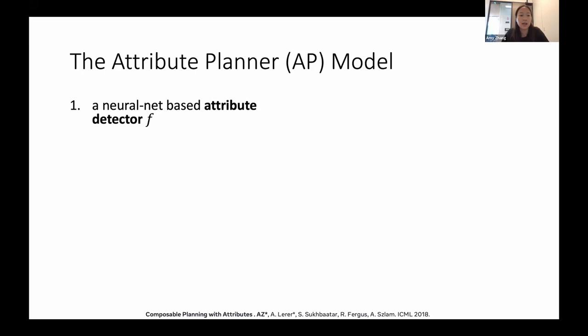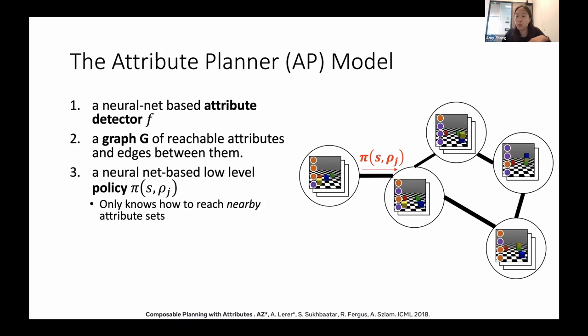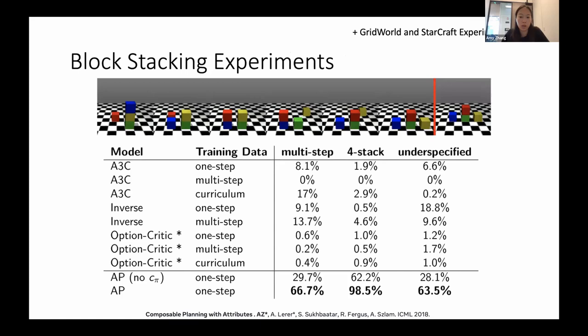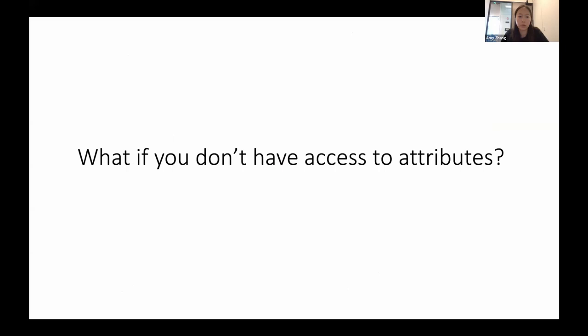As an example, in the block stacking environment, these relational attributes is just: the blue block is to the left of the red block, which is on top of the green block. We just want to learn to detect these attributes from pixel observations. We can now build a graph of reachable attributes and edges between them. We can train a low-level policy that knows how to reach these nearby attributes. Then we can just do graph-based planning in order to find a policy that will allow us to move from some starting configuration to some goal configuration of blocks. We see that if we compare this to model-free methods and hierarchical RL methods, we can achieve much better performance.